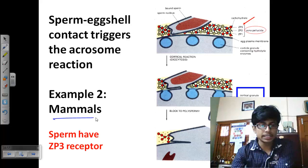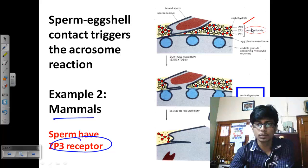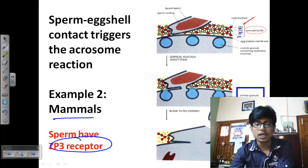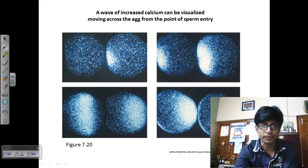In mammals, the sperm has ZP3 receptors and interacts with ZP3, ZP2, and ZP1 in the zona pellucida. Upon interaction with the sperm, ZP2 and ZP1 are degraded; ZP3 remains but is modified. This modified ZP3 is required for preventing any further interaction of sperm with the egg cell surface.